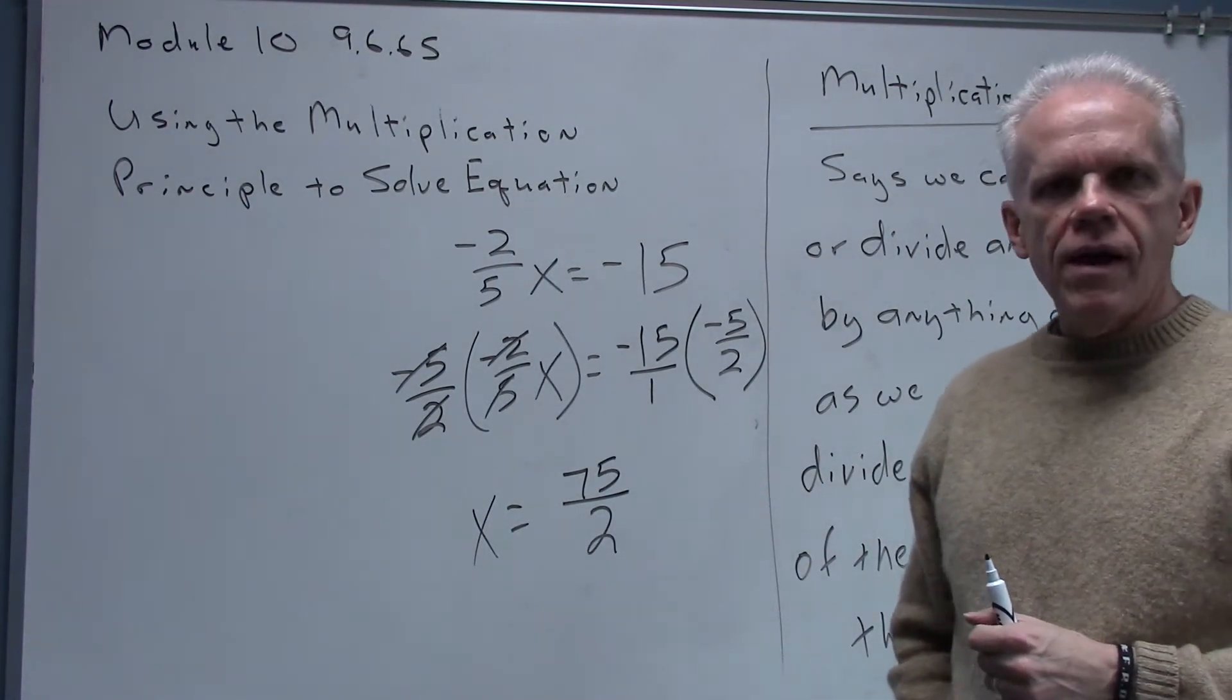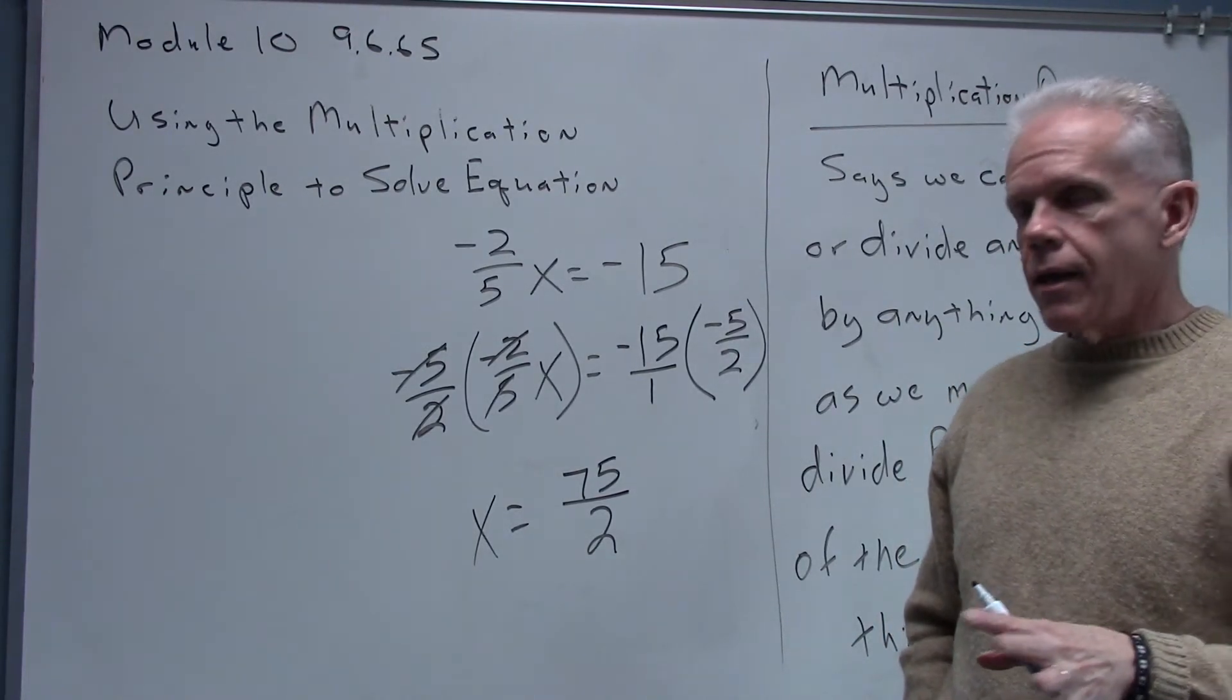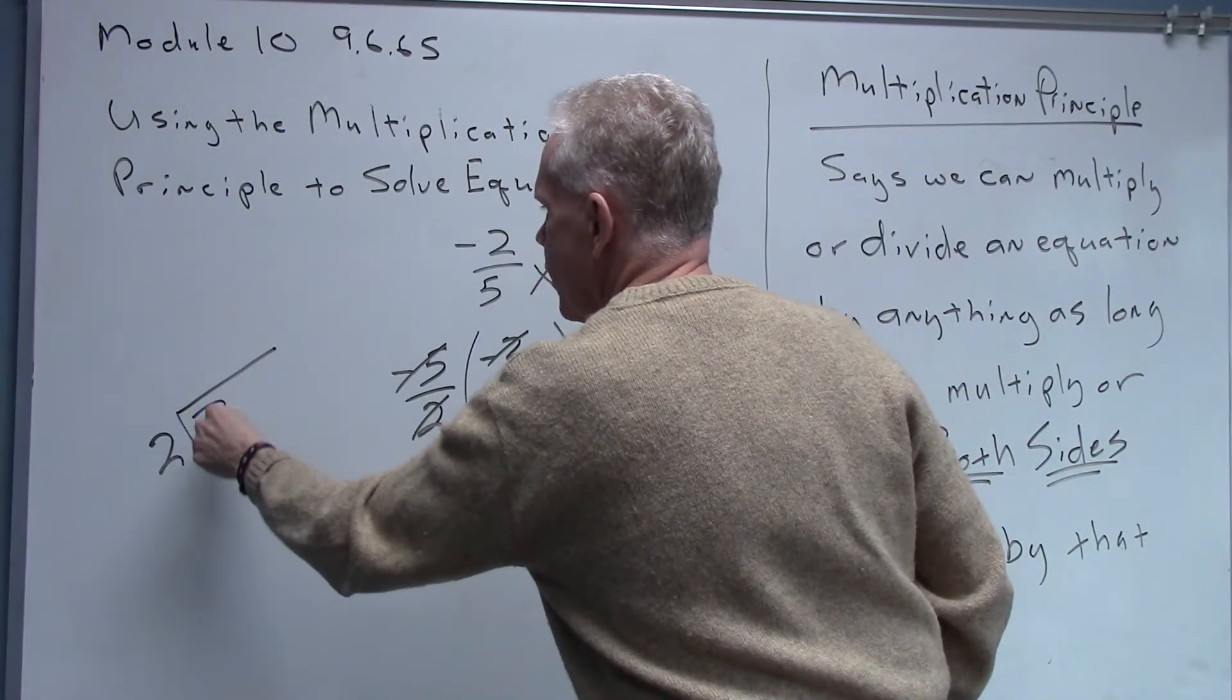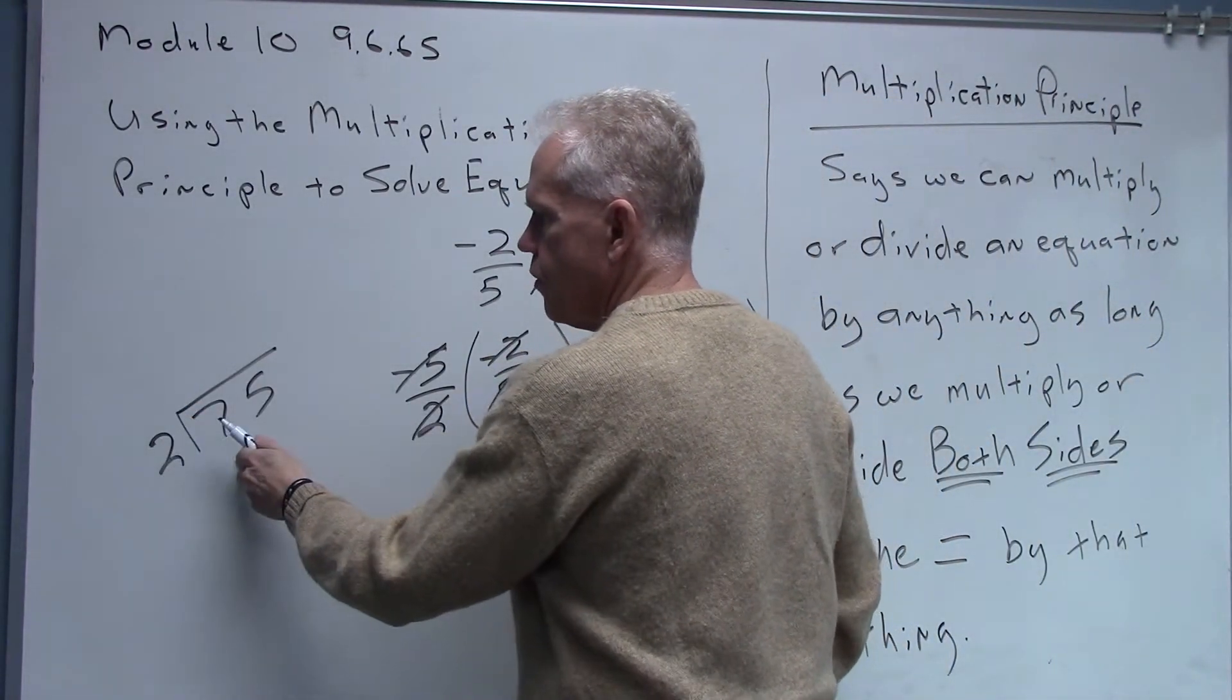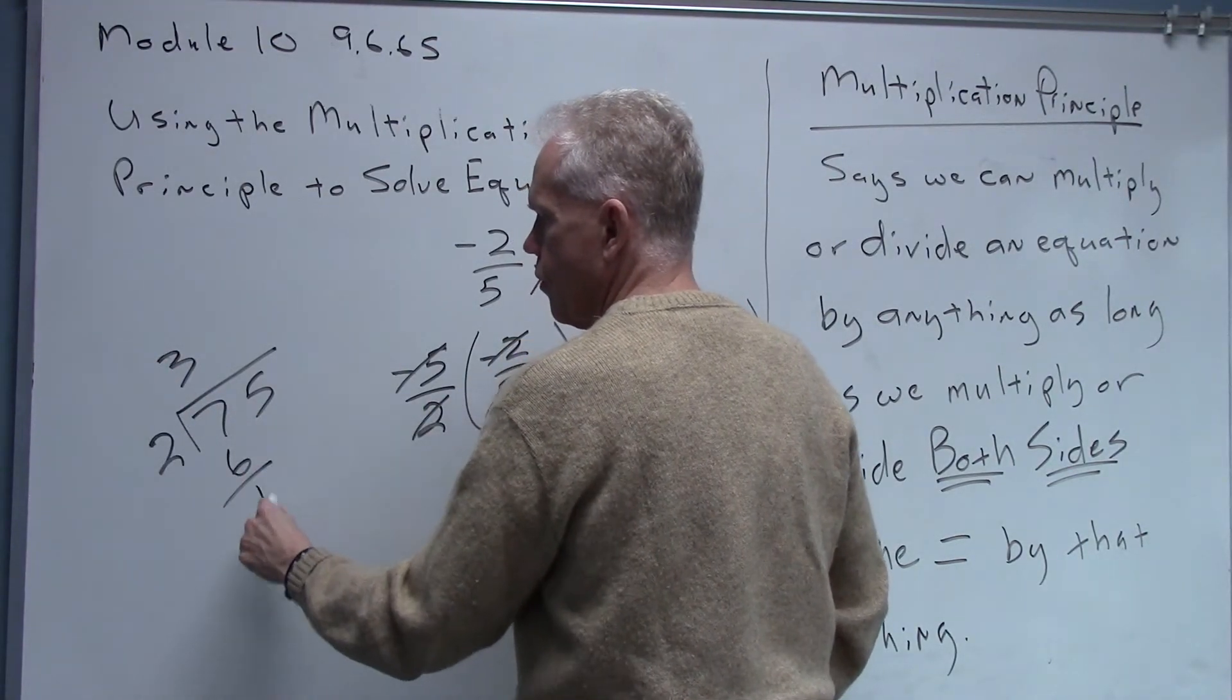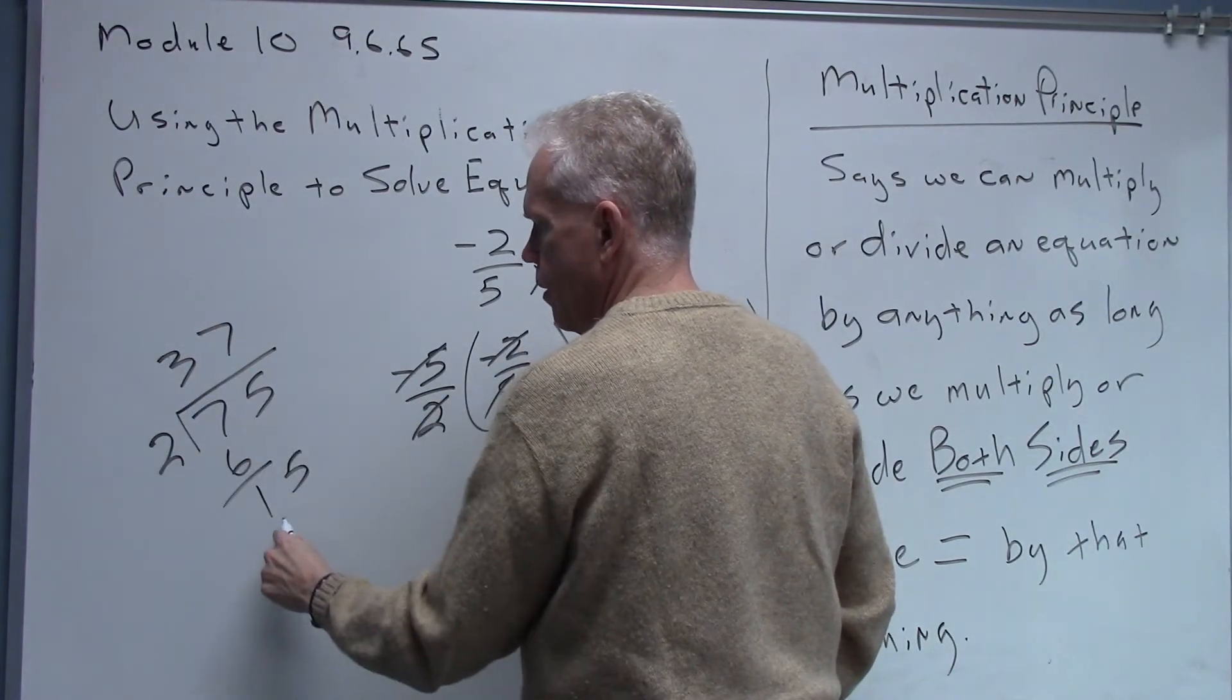If we wanted to change it to a mixed number we can by dividing two into seventy-five, and we wouldn't do it as a decimal, we would do it as a mixed number. So two and two into seven goes three, there's a six. Two into fifteen goes seven, seven, there's a fourteen, there's a one-half.